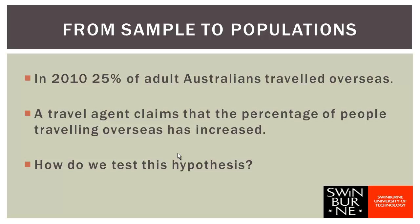Let's look at a second example. According to the Australian Bureau of Statistics, in 2010 25% of adult Australians travelled overseas. A travel agent claims that the percentage of people travelling overseas has increased since 2010. The population here is all adult Australians, but we can't ask all of them. So we take a sample — in this case 111 Australian adults — and we asked each person if they had travelled overseas in the last 12 months. This is a categorical variable: either they travelled overseas or they didn't.